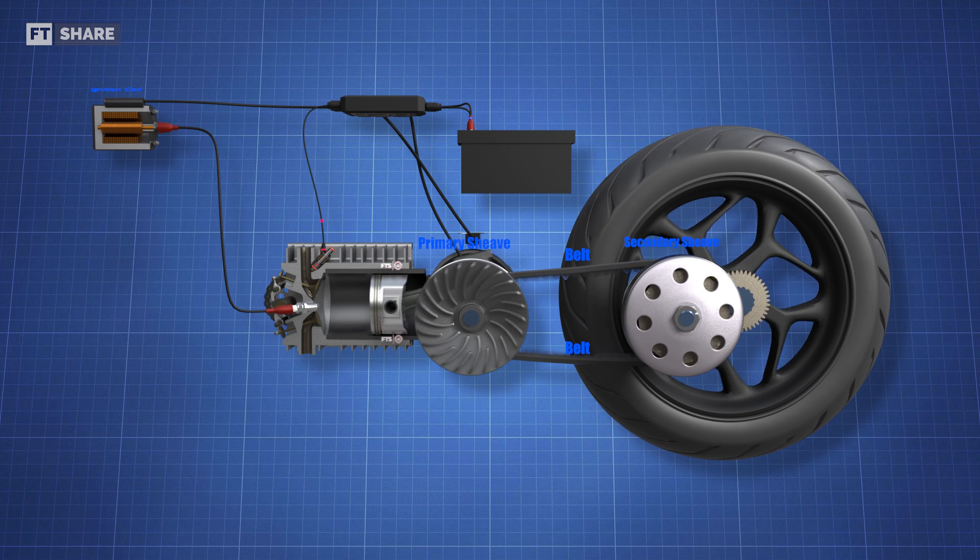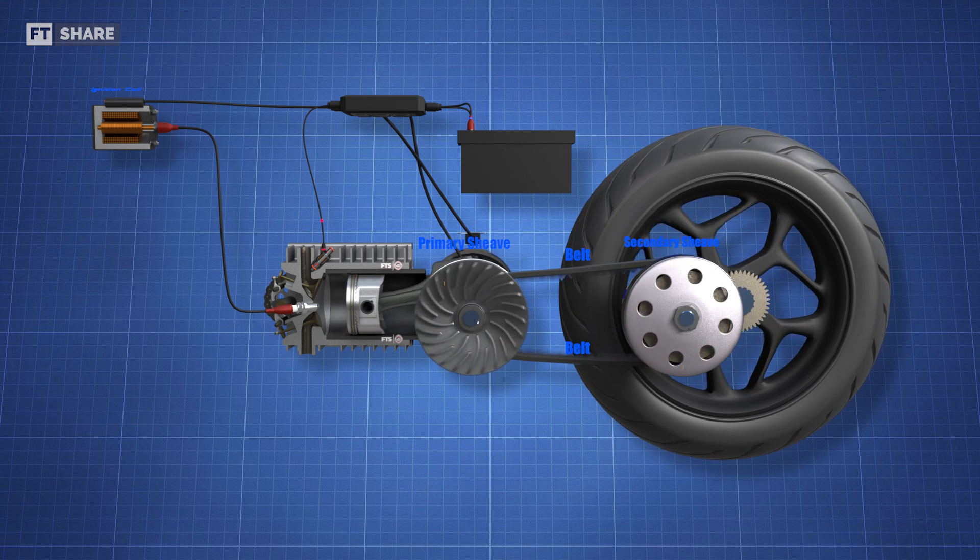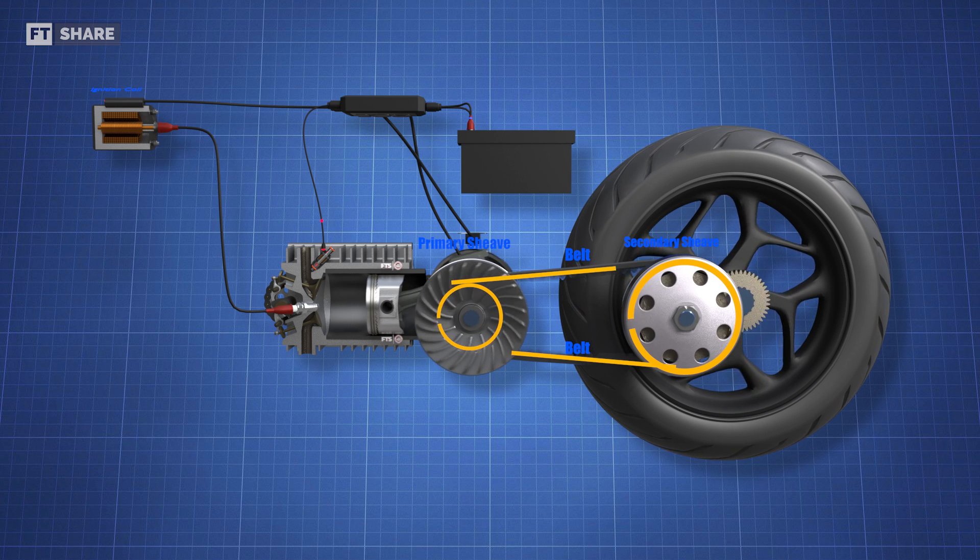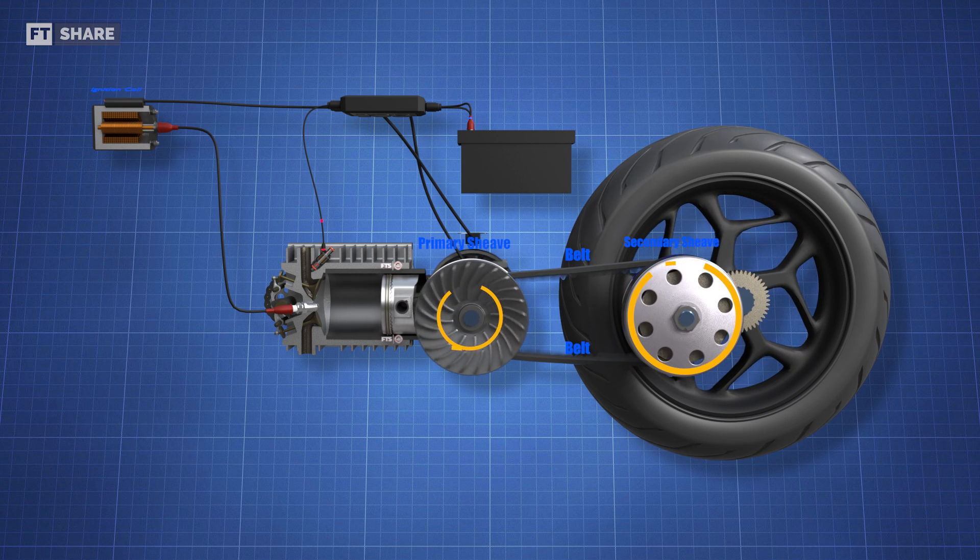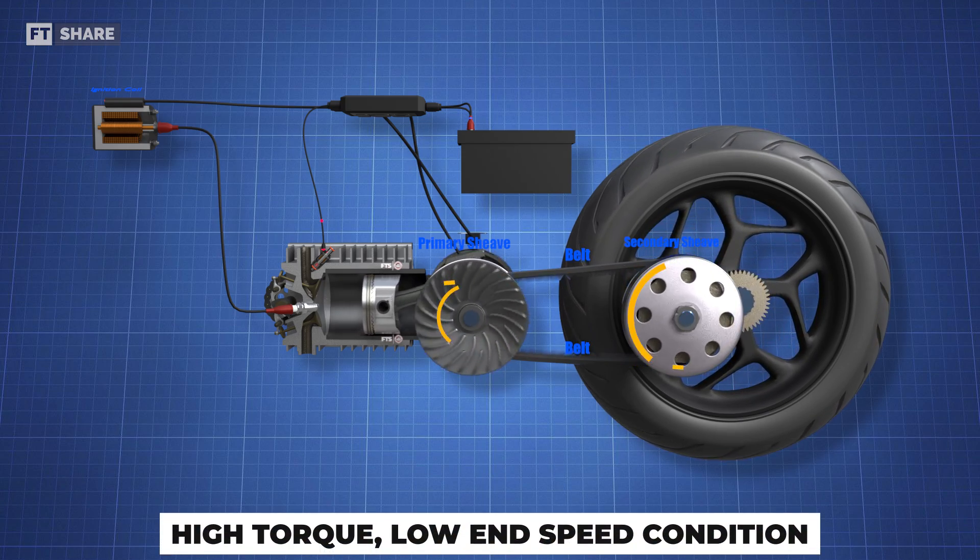On the other hand, at the drive pulley or primary sheave, the axial stiffness of the belt will push the primary sheave to its farthest position. This causes the primary sheave to have a minimum diameter. This is a high-torque, low-end speed condition.